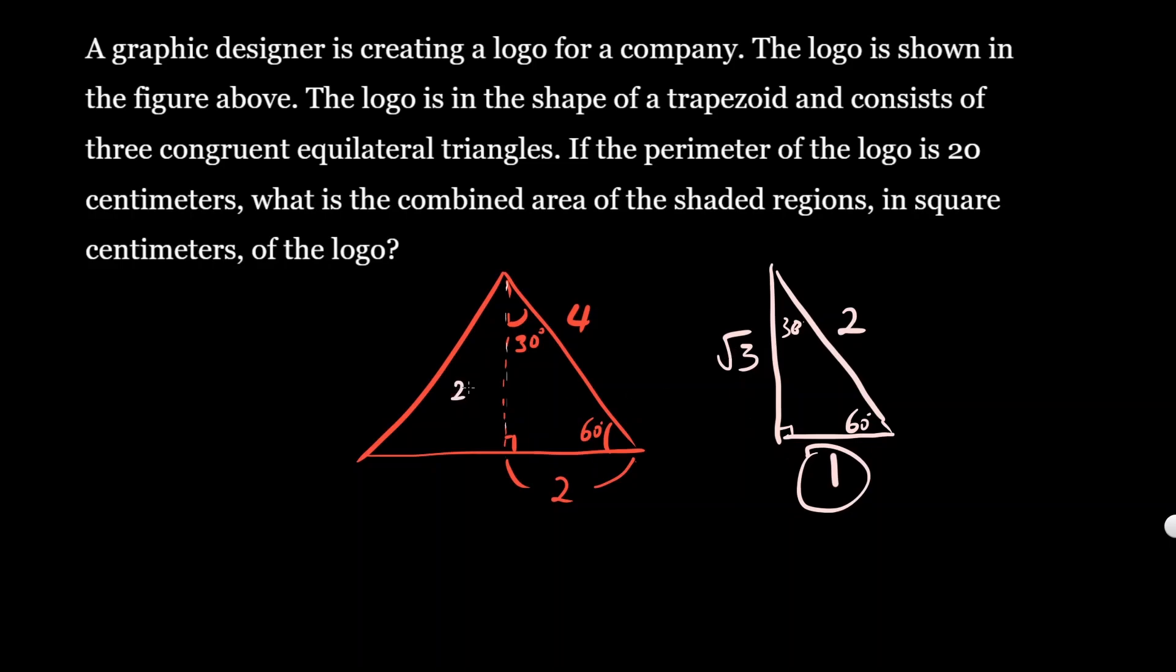Well, area of the triangle right there is one-half times base, which will be four, that's the whole base of this triangle, four times the height of the triangle, which is two times square root of three. Then I'm going to multiply by two because remember in the earlier example right here we got two of these shaded triangles.